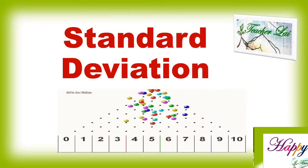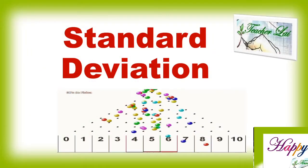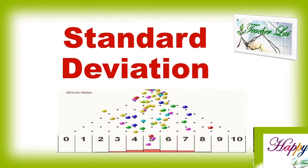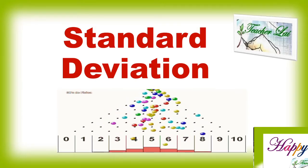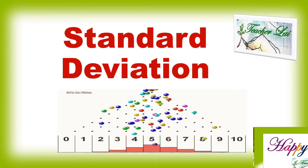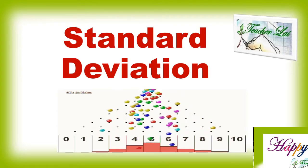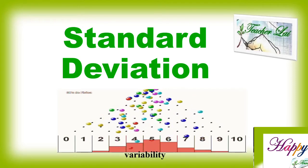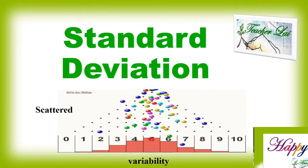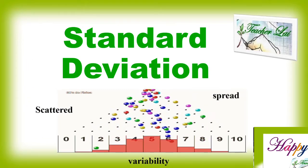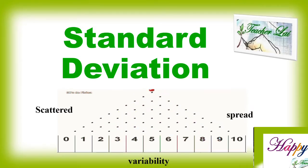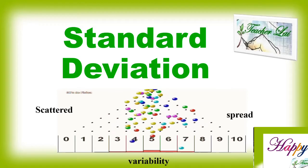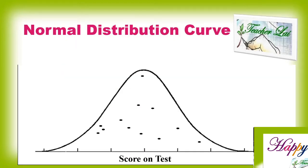In statistics, the standard deviation is a measure of the amount of variation or dispersion in a set of values. When we say dispersion, that entails the variability, scatteredness, or spreadness of the raw scores. It is the extent to which a distribution is stretched or squeezed, usually displayed in a normal distribution curve.